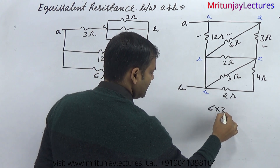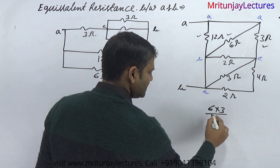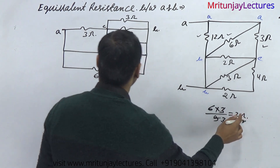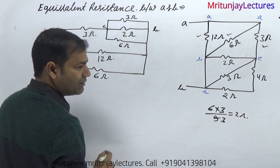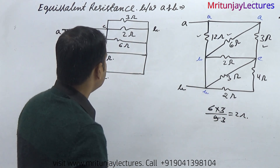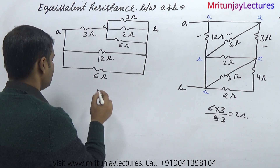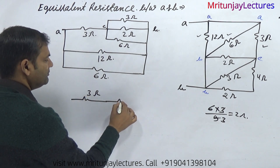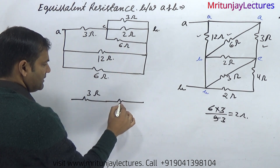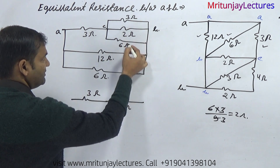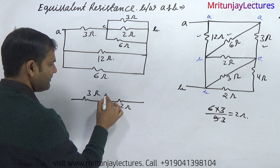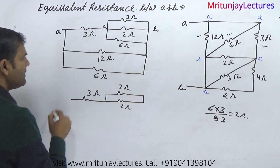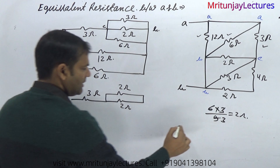6 and 3: 6 times 3 divided by 6 plus 3 — that is 18 over 9, which gives 2 ohm. Now 2 and 2 are in parallel — combination of these two is 1 ohm. After that, 3 ohm. 6 and 12 are in parallel — combination of 6 and 12 is 4 ohm.